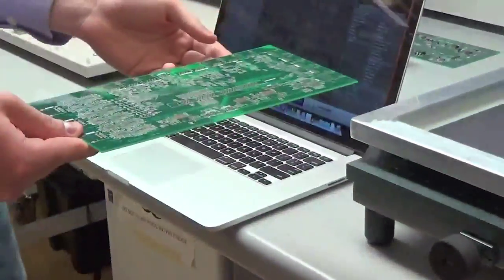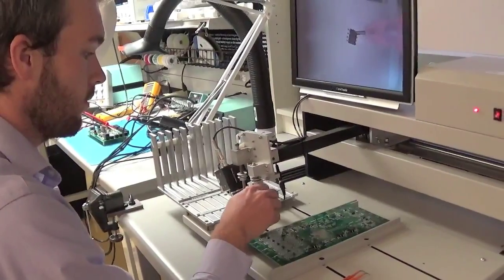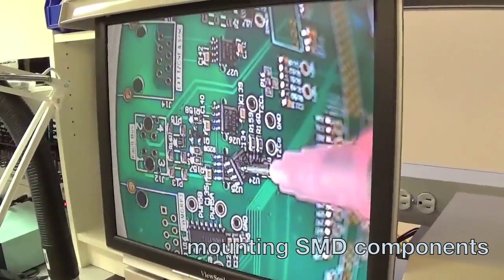After applying solder paste, we take the board to the manual pick and place where we proceed to place the different surface mount components.